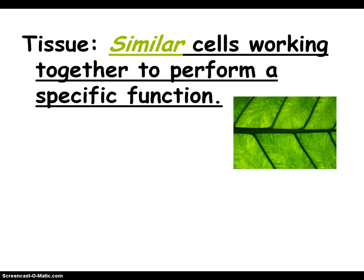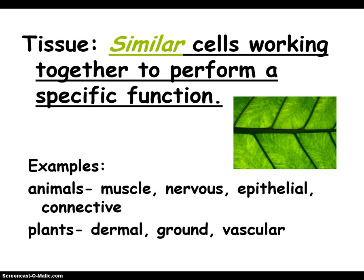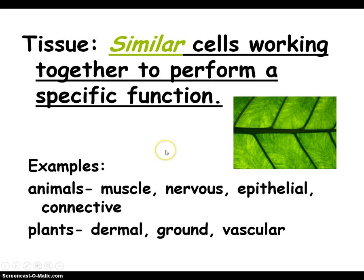Cells make tissues. If we take similar cells and they work together to perform a function, we get a tissue. That's a picture of a leaf close up — that's technically leaf tissue, but that part right there is probably some vascular tissue, so someone could make an argument that it's an organ, but the picture is trying to show you a tissue. We have nerve tissue, muscle tissue, nervous tissue, epithelial, and connective tissue in humans. And in plants we have dermal, ground, and vascular.